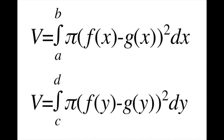Similarly, a washer revolving around the y-axis equals the definite integral of pi times the quantity f(y) minus g(y), whole quantity squared, with respect to y from c to d. Note that the bounds c to d are y equals c to y equals d.